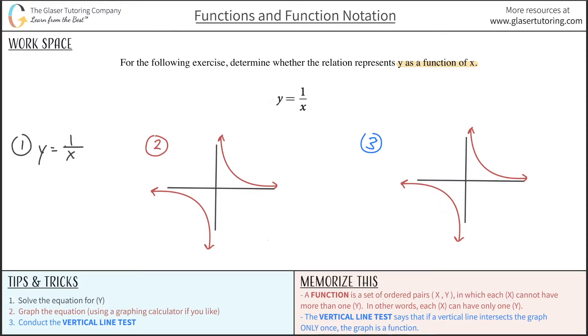And the vertical line test says that if a vertical line intersects the graph only once, then the graph is indeed a function.